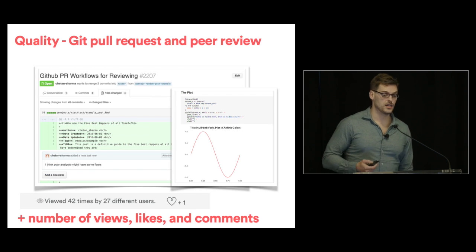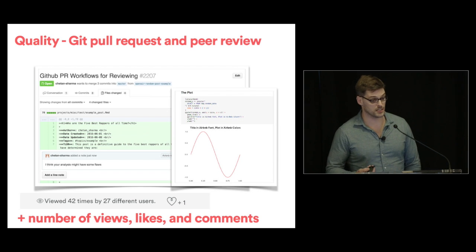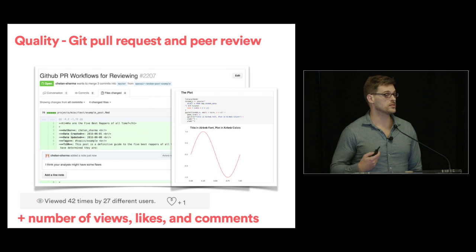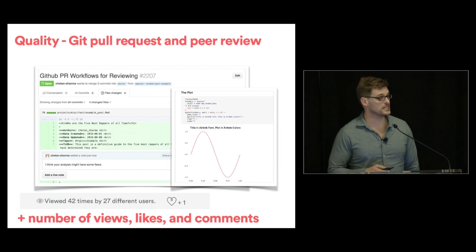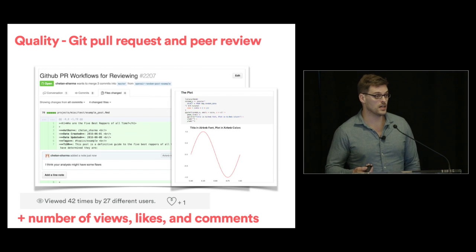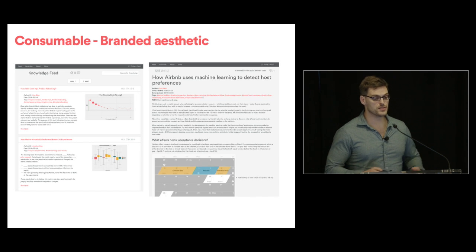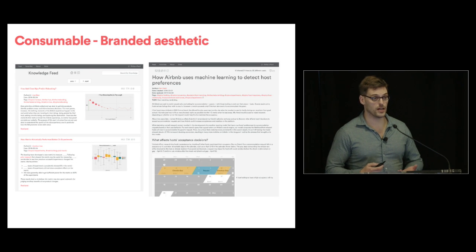The third component is quality. For research to be useful, it has to be peer-reviewed — we need at least two people to review your research before it's shared in the knowledge repository. We use GitHub for that, so the research is submitted with the R Markdown and rendered Markdown, including code, graphs, and analysis. We also have views, likes, and comments in our web UI, so anyone with thoughts after publication can write comments. We use social proof — 42,000 views on some knowledge posts indicates very high quality. The fourth component is consumability through branded templates, giving the knowledge repository an Airbnb feel and look.